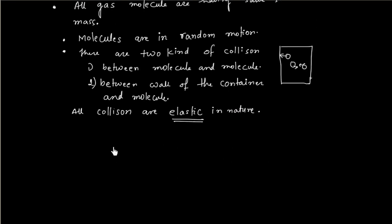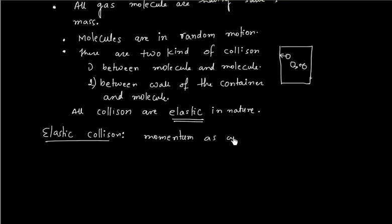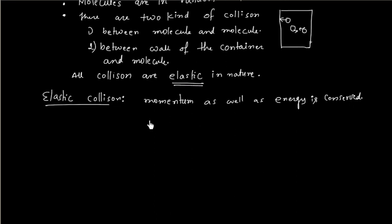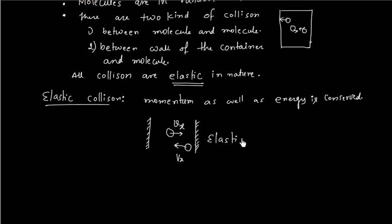When we say elastic collision, this means during collision both momentum and energy are conserved. For the present purpose, we can simply say: if a molecule is moving with velocity Vx and collides with the wall, it will return with the same velocity Vx. So in the case of an elastic collision, it returns with the same velocity.